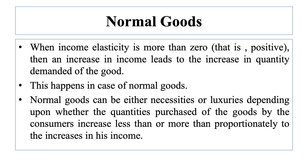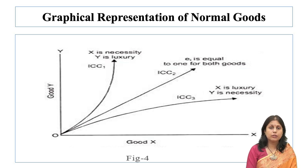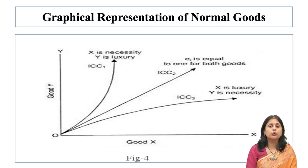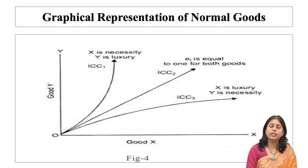In figure 4 we can see three different slopes of income consumption curve. The slope of income consumption curve ICC1 is increasing, which implies that quantity purchased of commodity X increases less than proportionately to the increase in income. Therefore, in the case of ICC1, good X is a necessity and good Y is a luxury. On the other hand, the slope of income consumption curve ICC3 is decreasing, which implies that the quantity purchased of good X increases more than proportionately to increases in income, and therefore good X is a luxury and good Y is a necessity.